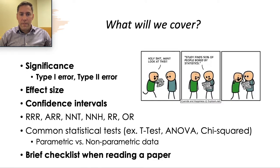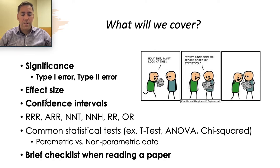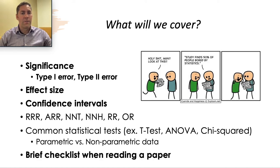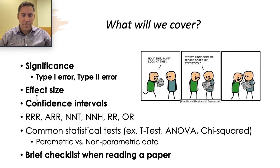In terms of this statistics part, what I'm going to focus on is significance, effect size, and confidence intervals — these are the most important things. We're going to dovetail a little bit into relative risk reduction, absolute risk reduction, number needed to treat, number needed to harm, relative risk, and odds ratio. If you don't understand these, it's not as big a deal as if you don't understand the bolded ones. We'll talk about some common statistical tests and when to apply them, and then a brief checklist when reading a paper.